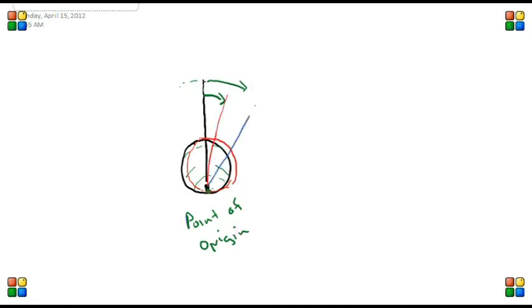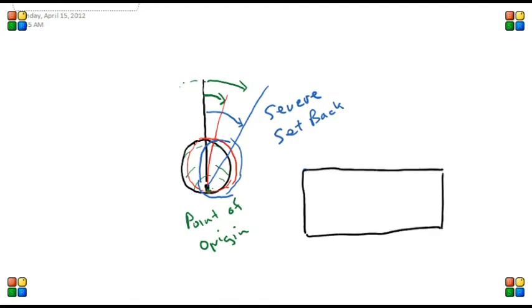And as you see in this diagram, when we got to the severe point, you can see that whole wheel's going to go back as caster is increased to the positive.